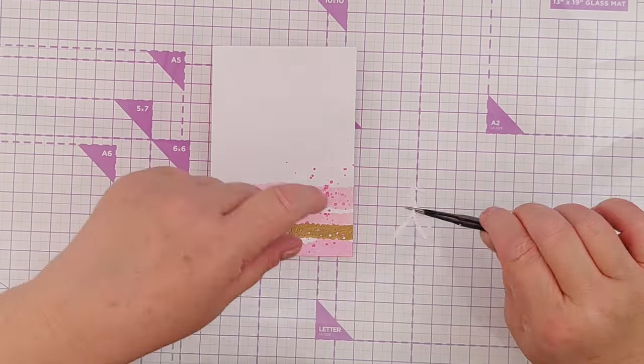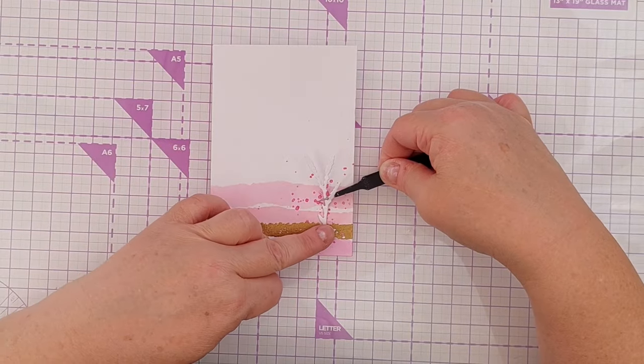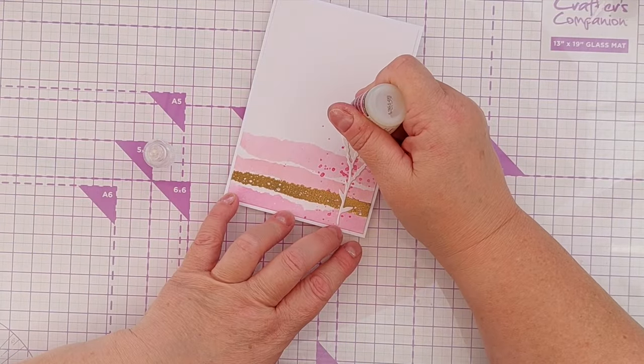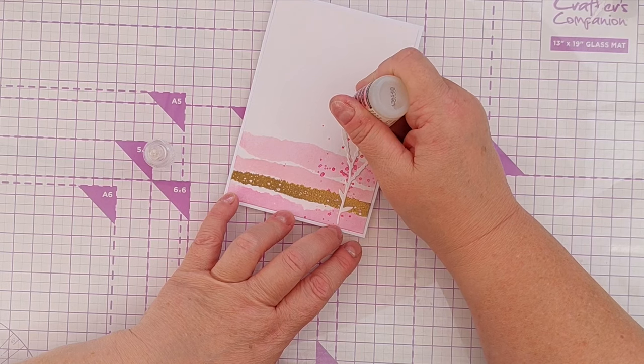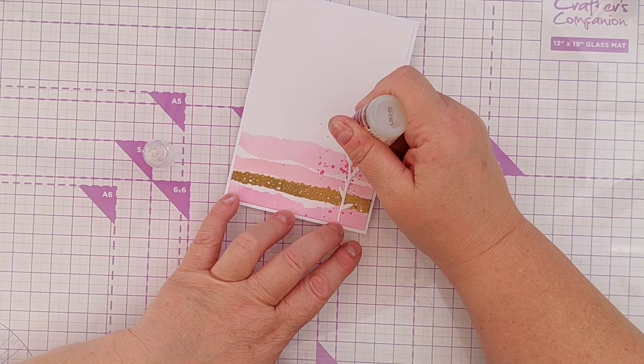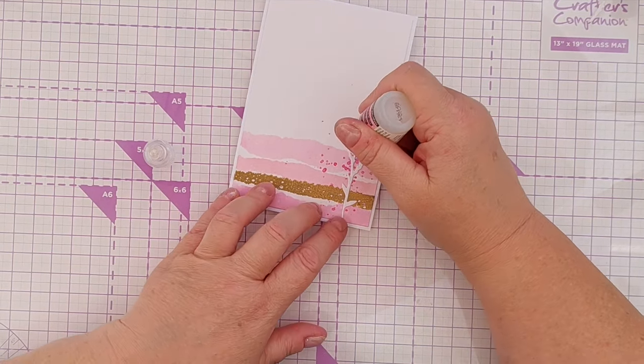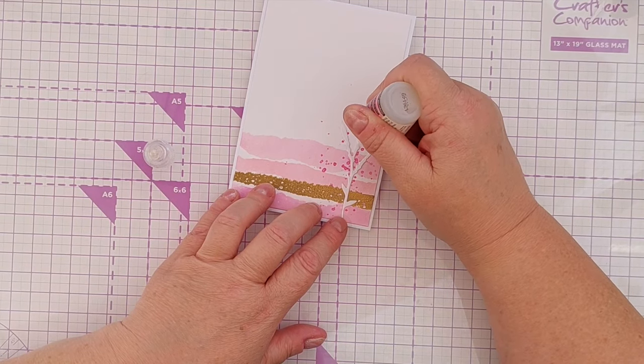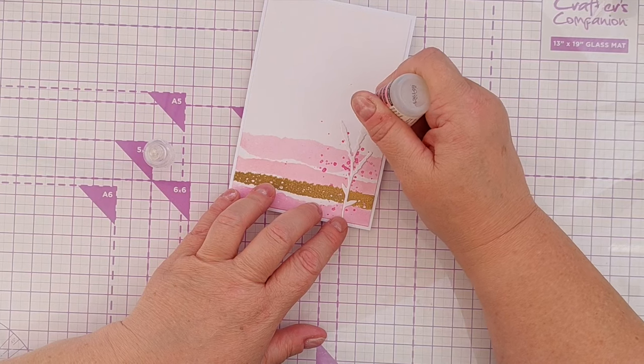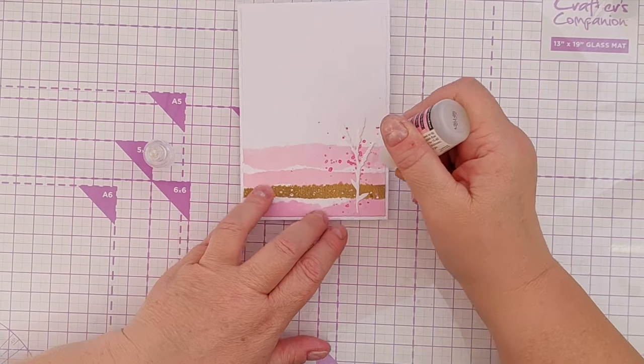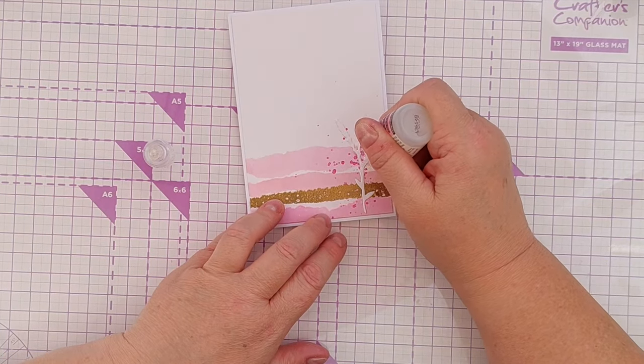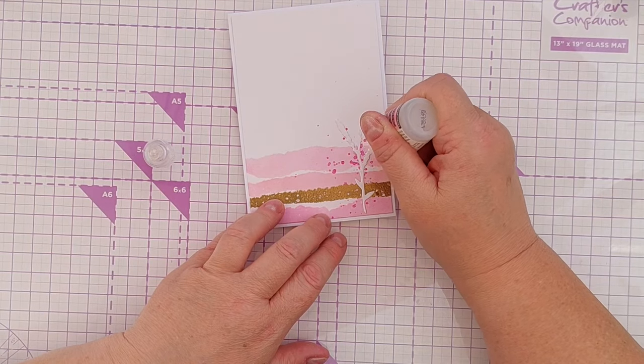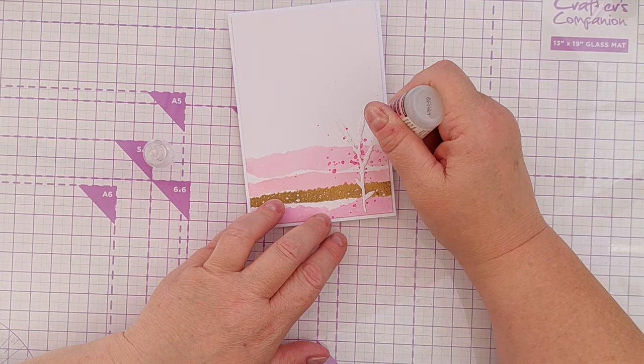To finish off my card, I decided to add a little white flower die cut, which I put to the right hand side of the card over that spattered area, so that's become the focal point. I glued that down, then I added some glossy accents on top to give that die cut a bit of dimension and a bit of shine.